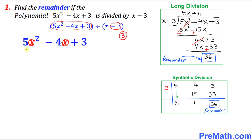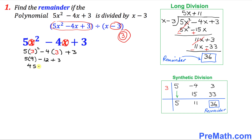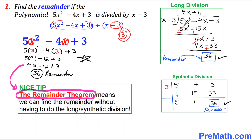Let's simplify. That is going to become 5 times 3 squared minus 4 times 3 plus 3. So wherever I put down the parentheses, I plug in the value 3. That gives us 5 times 9 minus 12 plus 3, which simplifies to 45 minus 12 plus 3, giving us 36. That is the remainder — the same as in long division and synthetic division. This simpler method is called the remainder theorem.